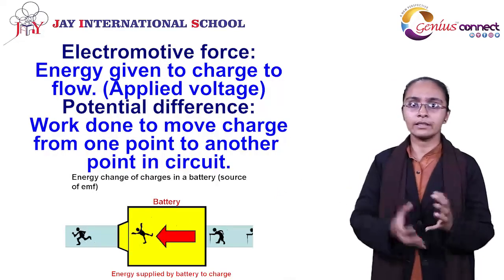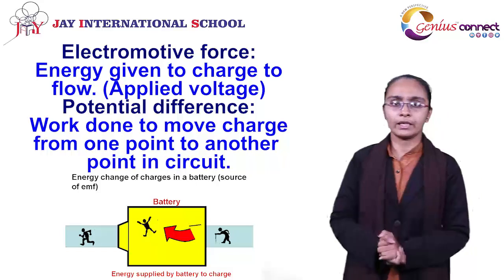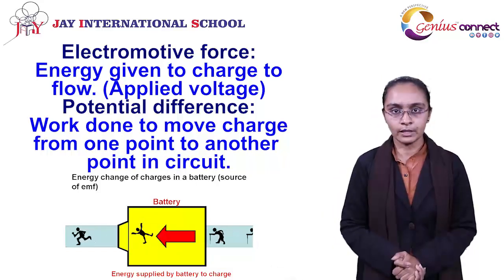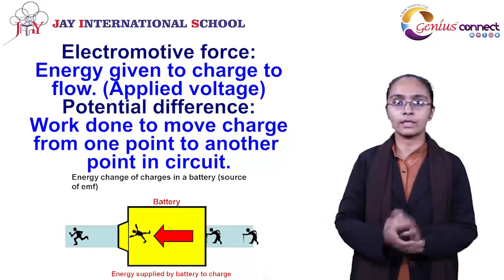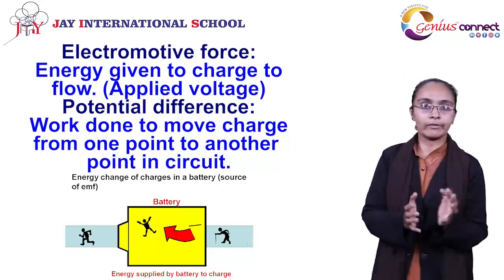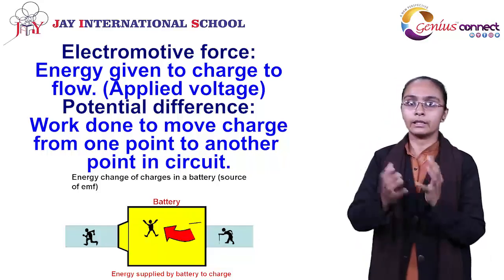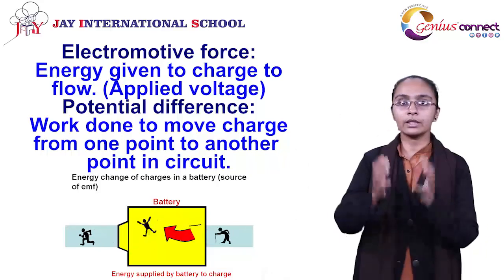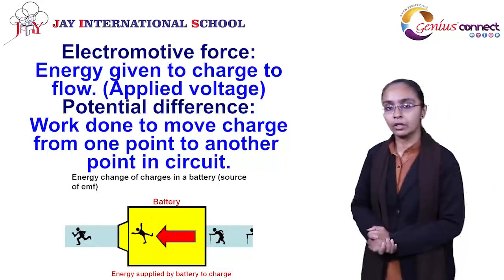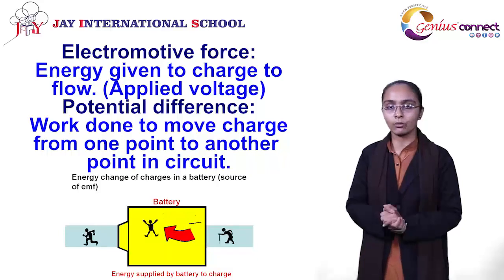By that, we understand there is a flow of charge. For the charge to get certain energy, the way by which it gets that energy is known as electromotive force, which comes due to the battery. The electromotive force is known as potential difference or voltage. If we define the voltage or potential difference: when charge moves from one point to another point, the work done required by the charge is exactly the potential difference required for the particular circuit.